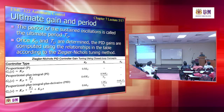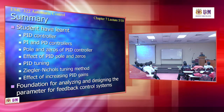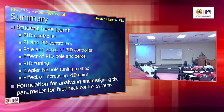All these equations are just based on KU and TU. So basically you have learned the PID controller, PI and PD controllers, poles and zeros of the PID controller, the effect of PID poles and zeros, PID tuning, the Ziegler-Nichols tuning methods, and the effect of increasing the P, I, and D gains. Whatever you have learned will become the foundation for analyzing and designing feedback control systems.